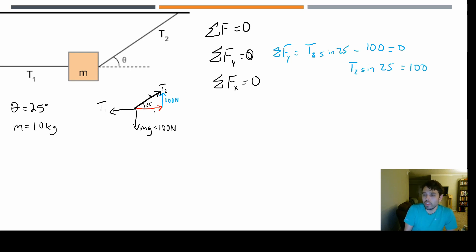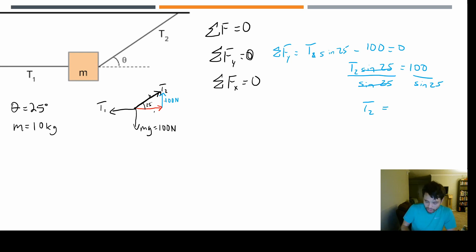We can solve for T2 by dividing both sides by sine(25). All our forces are in terms of T2, so the sines cancel on that side, giving us T2 equals 100 divided by sine(25). I'm getting 236.6 newtons — that seems reasonable. So T2 is 236.6 newtons.